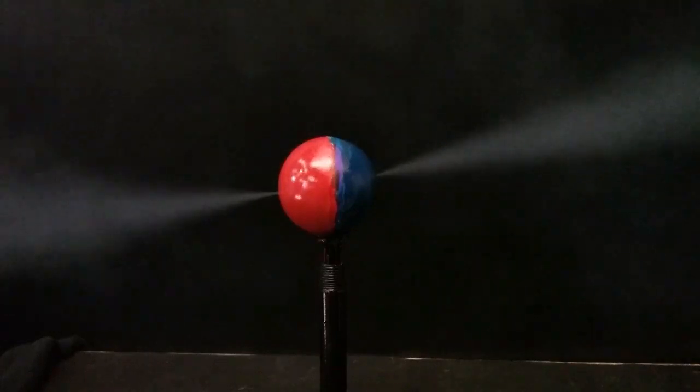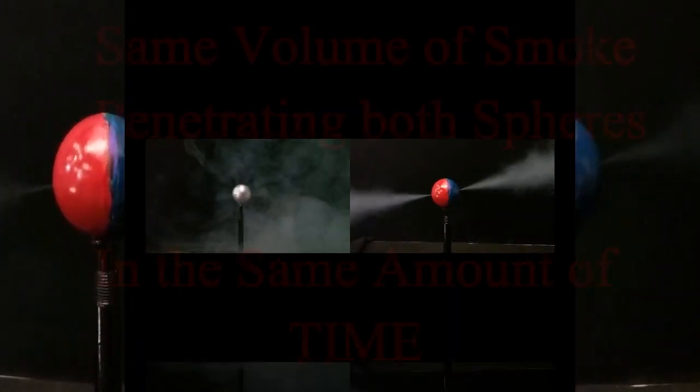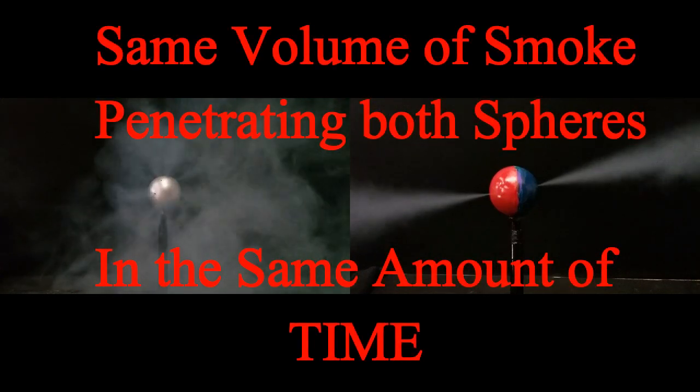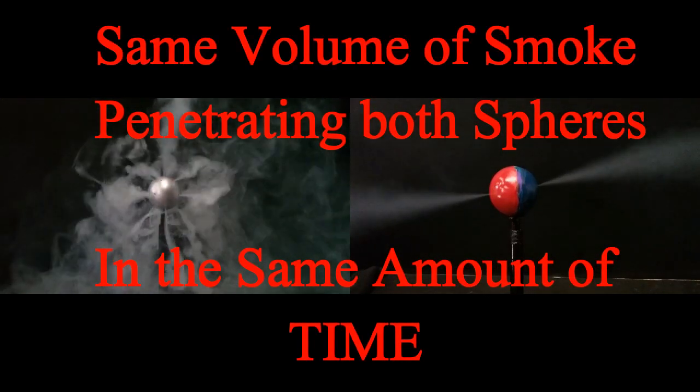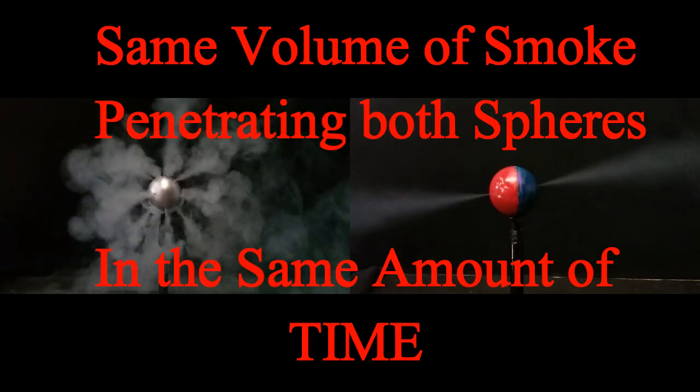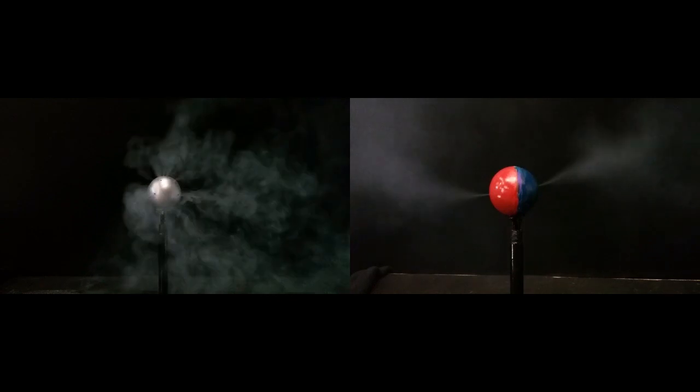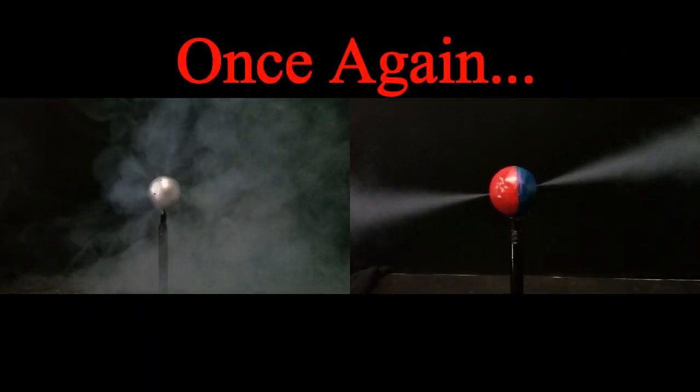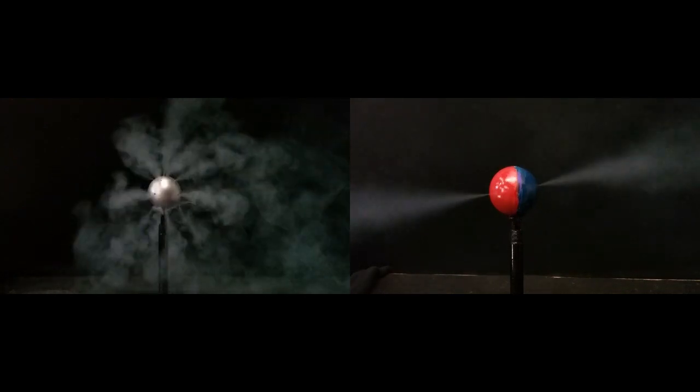What I'll show you next is them side by side. What you're seeing here is the same volume of smoke penetrating both spheres in the same amount of time. For the magnetized sphere, it has to pressurize gravity—gravity pressurizes into it to feed the entire sphere from two ends only rather than spherically radial like the one on the left, the non-magnetized.